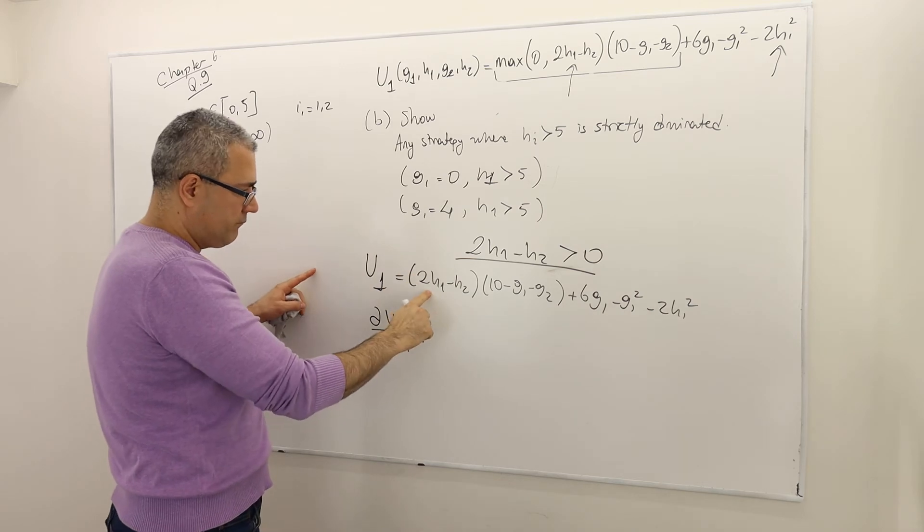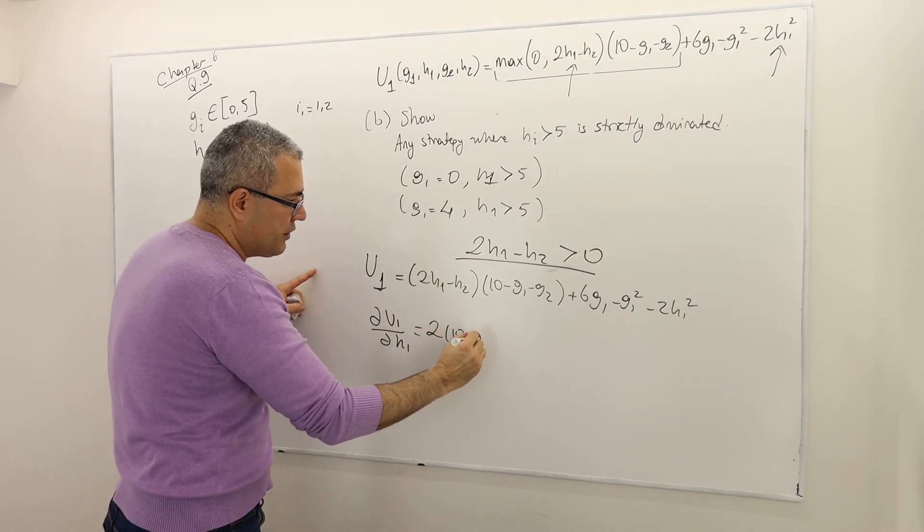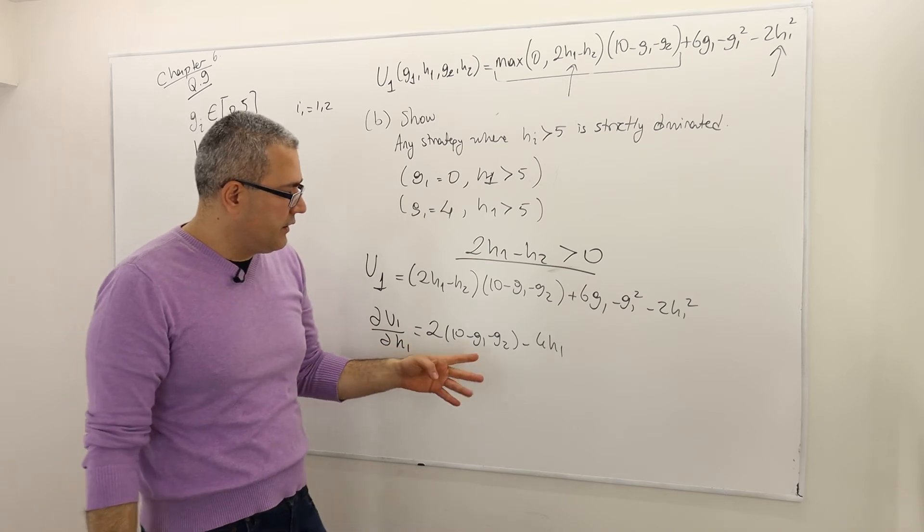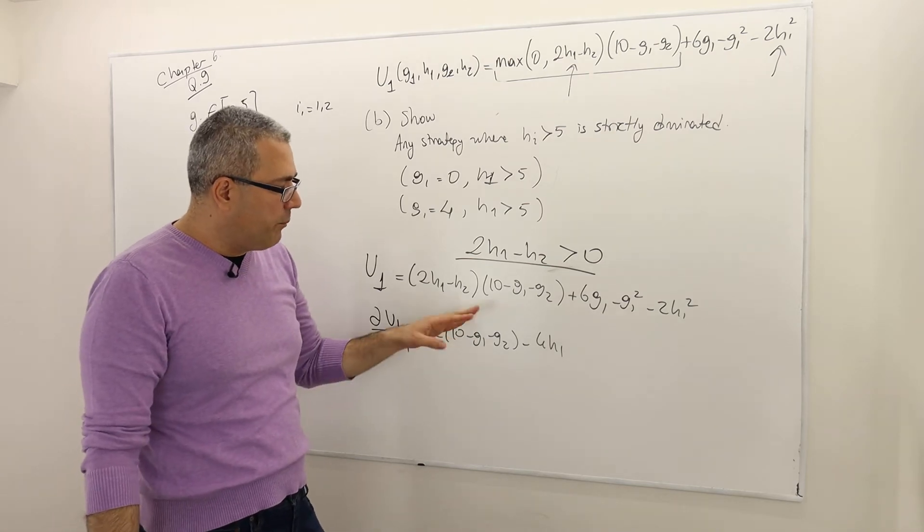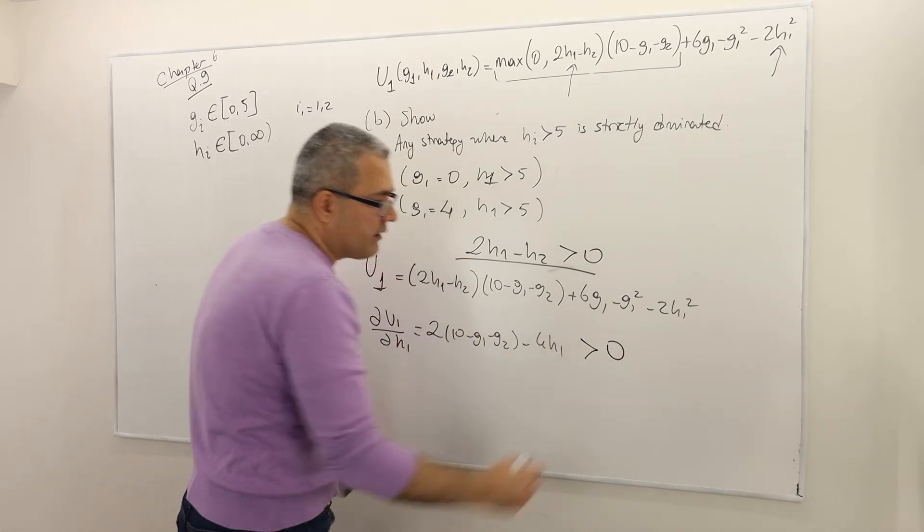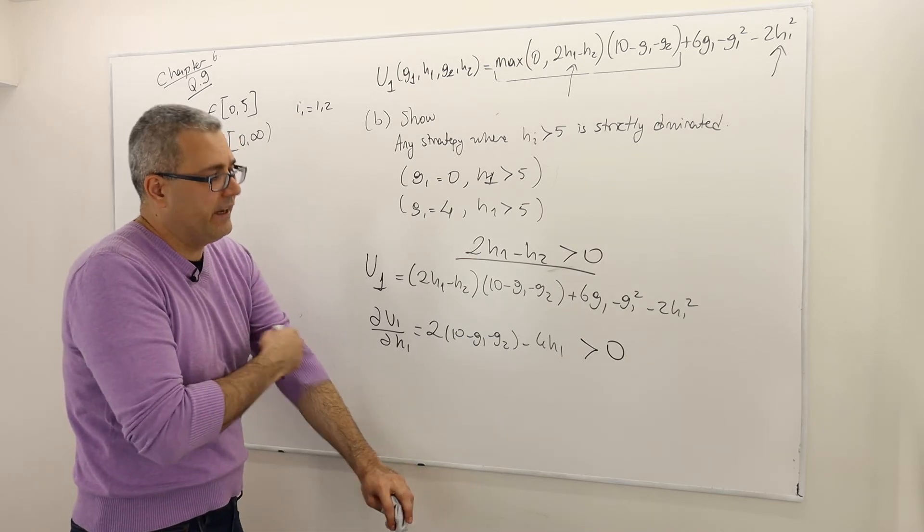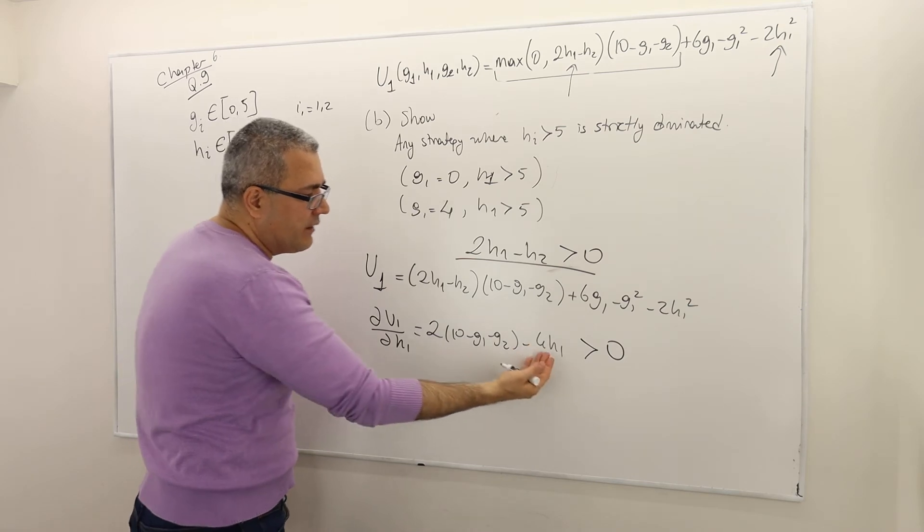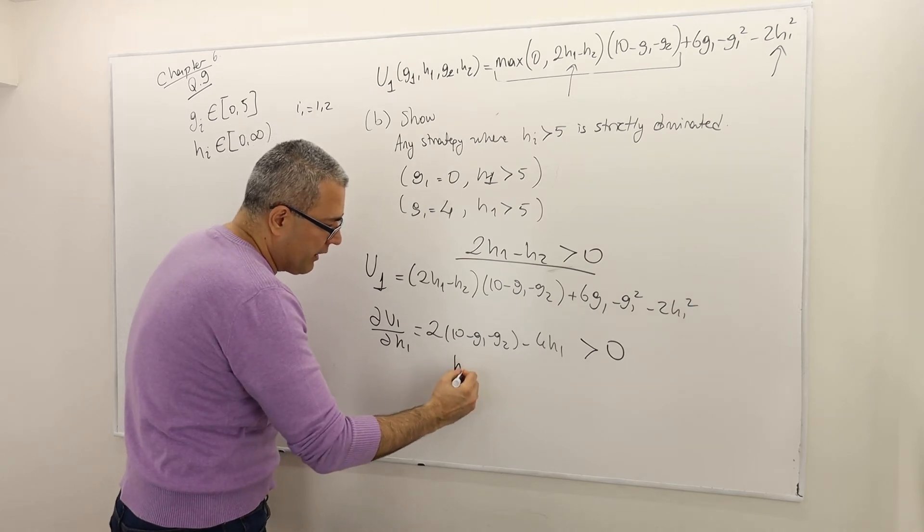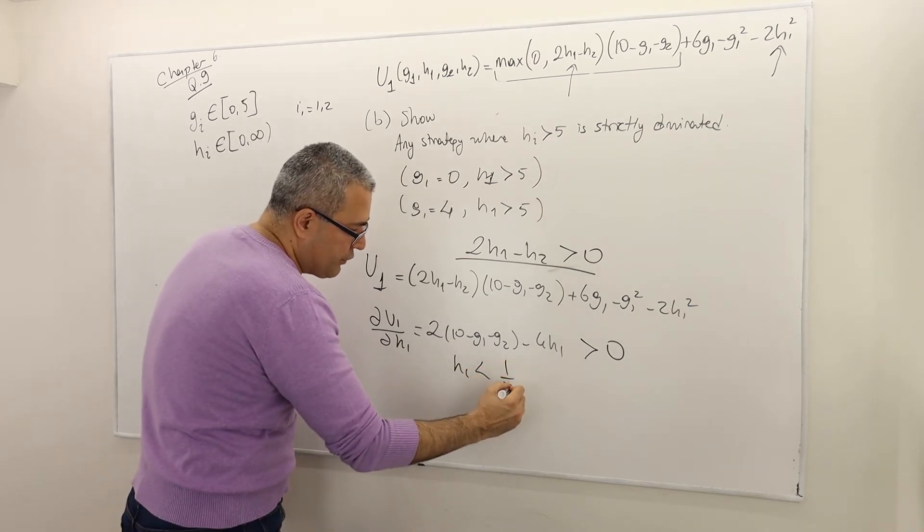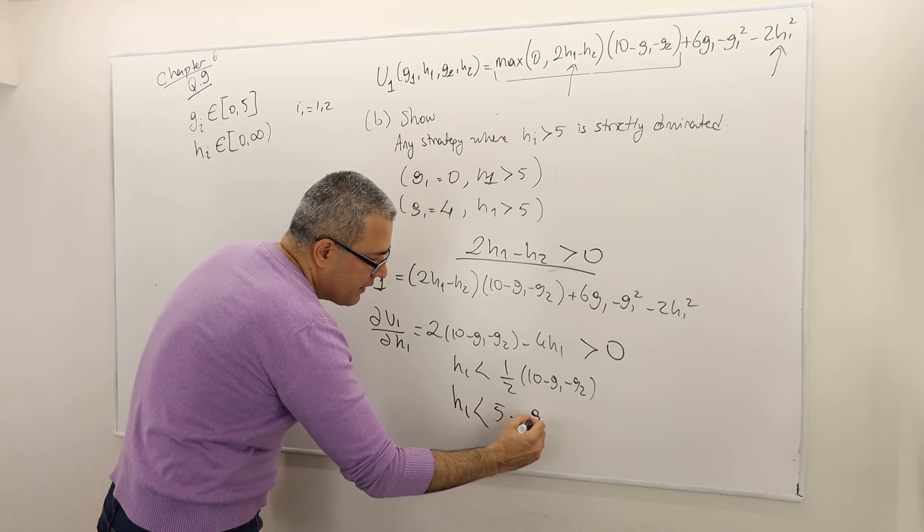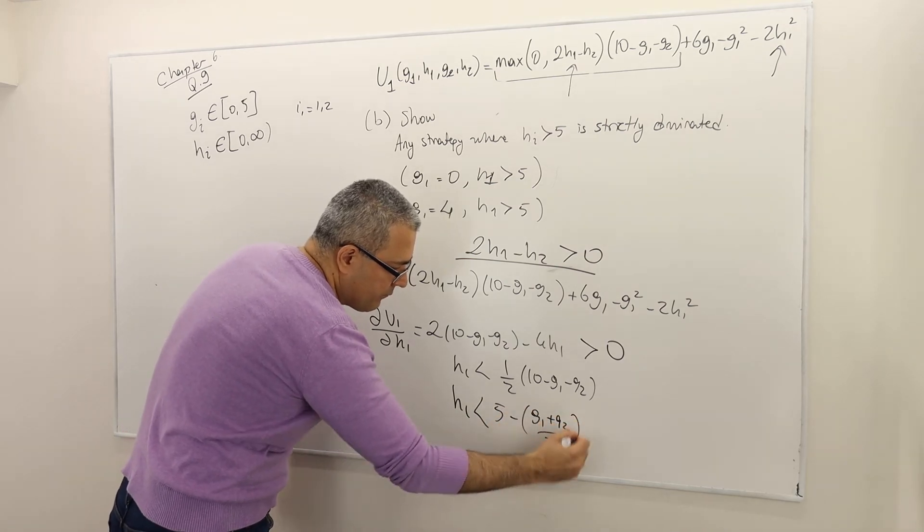So what is it equal to? So if you do the math, it's going to be 2, 10 minus G1 minus G2 minus 4H1. Okay. So clearly, this is, you know, positive or negative depending on how big G1 and G2 are, how H1. And so, therefore, let's find the region where this is positive or negative. I mean, it doesn't matter. So when is this positive? Well, send 4H1 to the other side. Divide both sides by 4. So what I'm going to have is the following. H1 is less than 1 over 2, 10 minus G1 minus G2. Or H1 is less than 5 minus G1 plus G2 divided by 2.